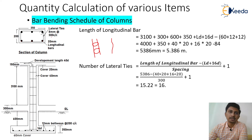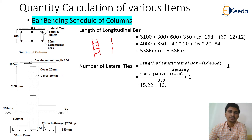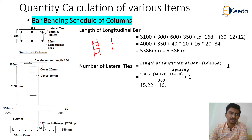There are lateral ties of 8 mm diameter placed at 300 mm center to center. Other dimensions given: starting from the bottom, there is a foundation depth of 350 mm, excavation depth of 600 plus 350, plinth height of 300 mm, and floor to floor height of 3100 mm.